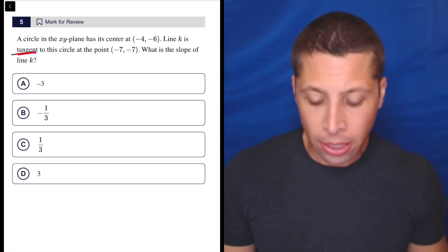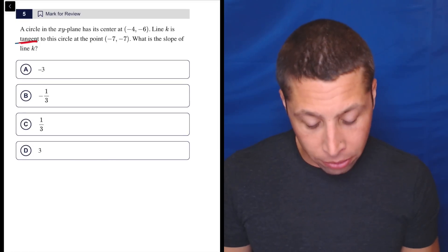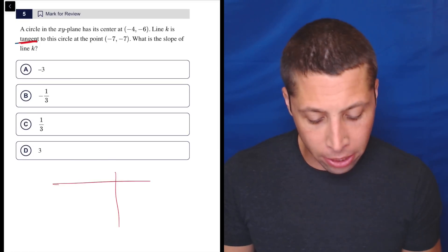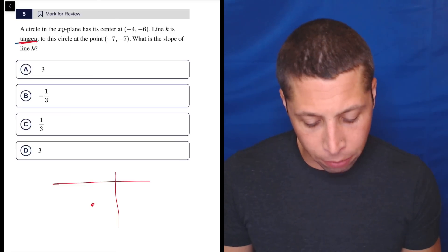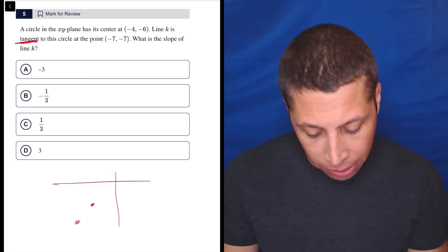It's much more about this idea of something being tangent. So let's draw a quick picture of what this is. So negative four, negative six. I'll just draw a quick XY plane here. So negative four, negative six, somewhere down here. That's the center. And then negative seven, negative seven would just be a little further down.